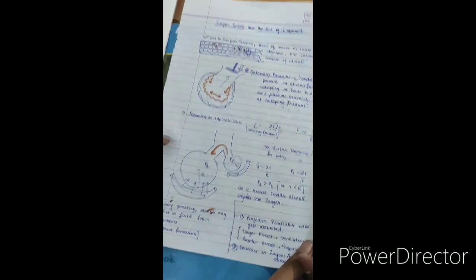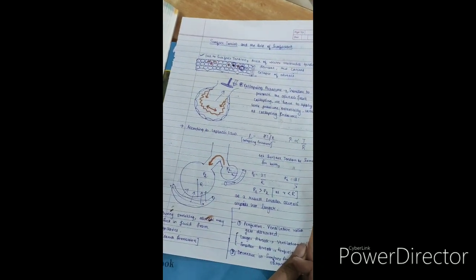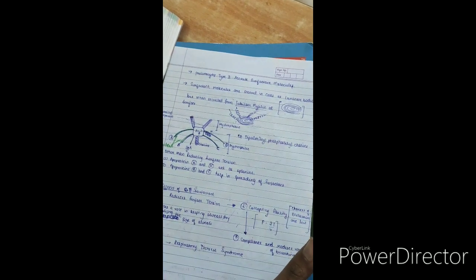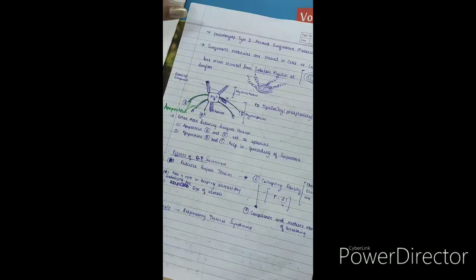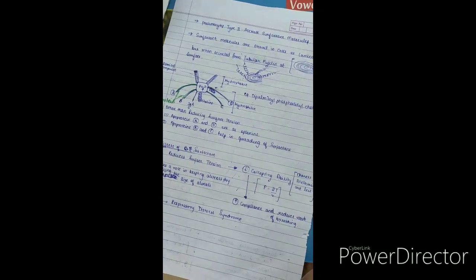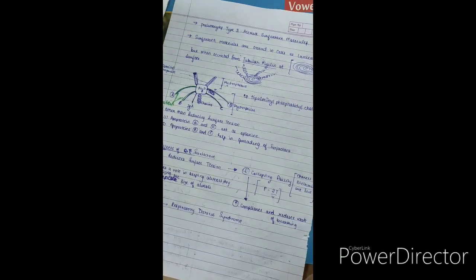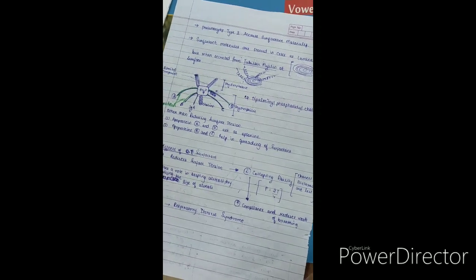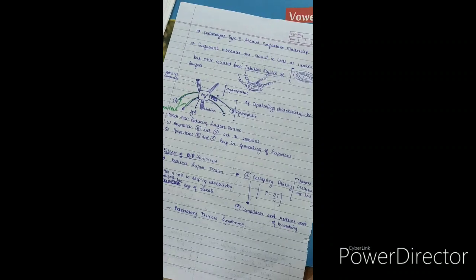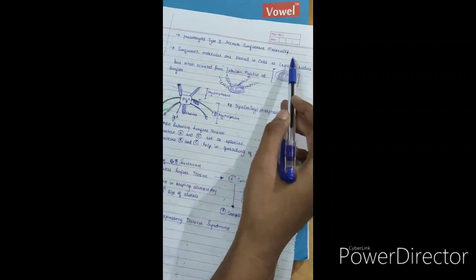In order to prevent them we are having surfactant. So what is the role of surfactant? It decreases the surface tension. Now we will talk something about the surfactant. Surfactant is secreted by the pneumocyte type 2. There are two types of cells in the alveolar epithelium. Pneumocyte type 1, whose prime function is exchange of the gases, and pneumocyte type 2, which secrete the surfactant molecules.